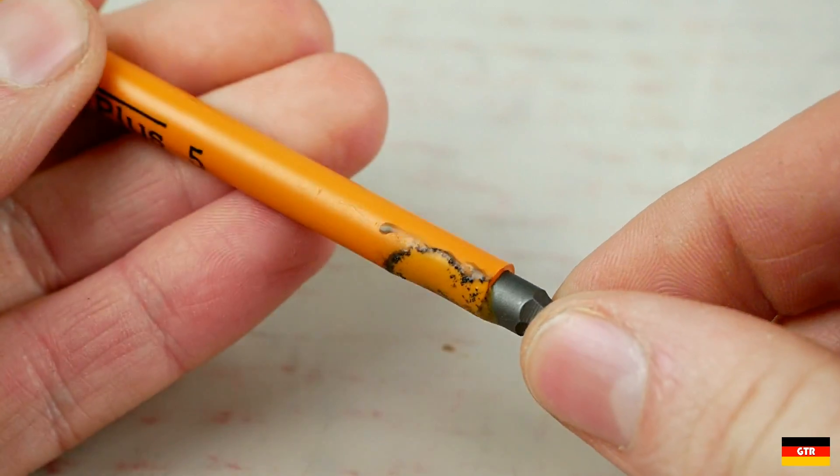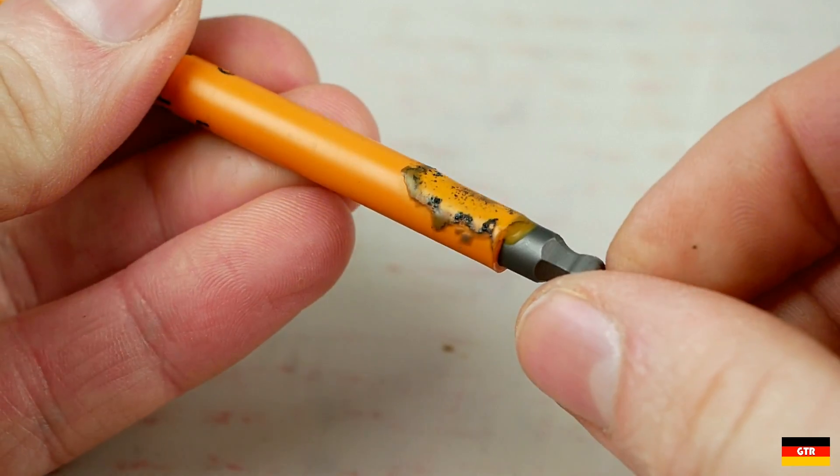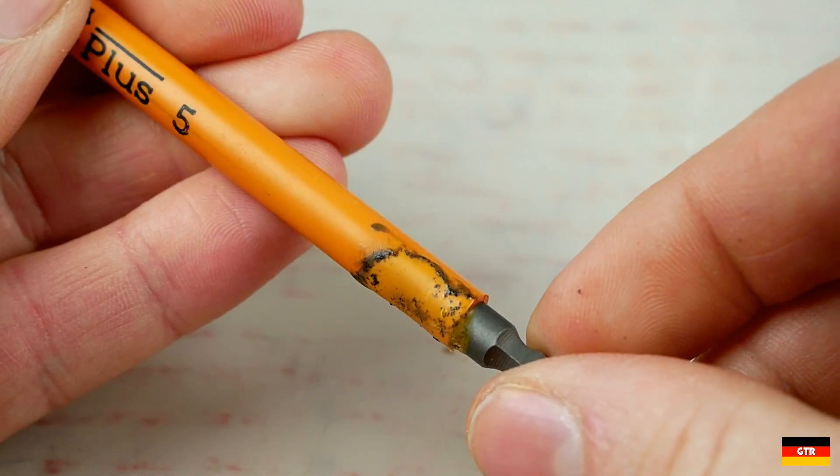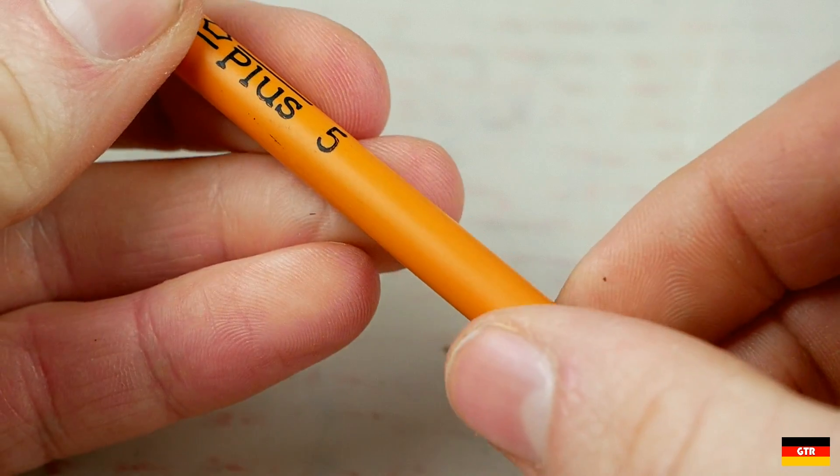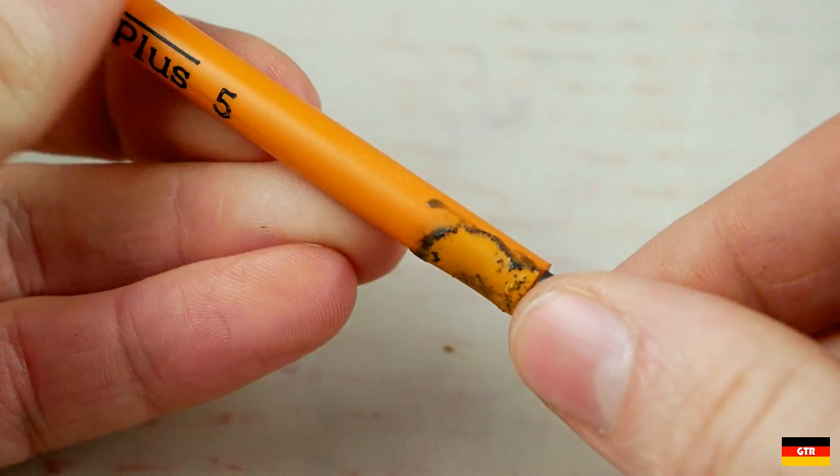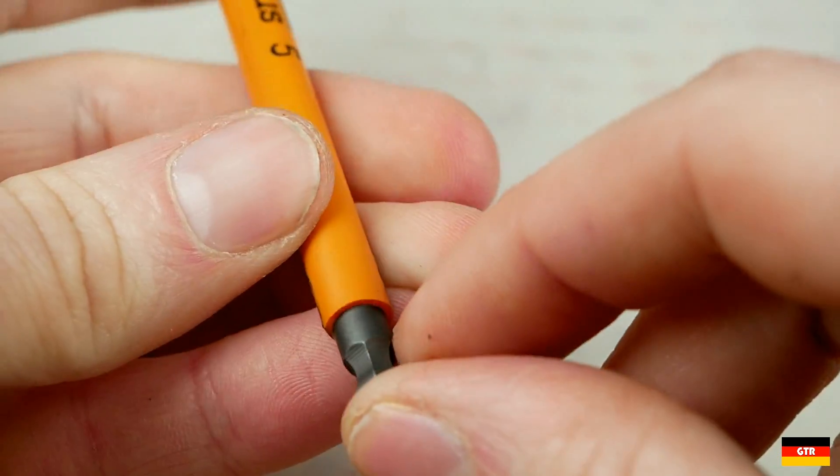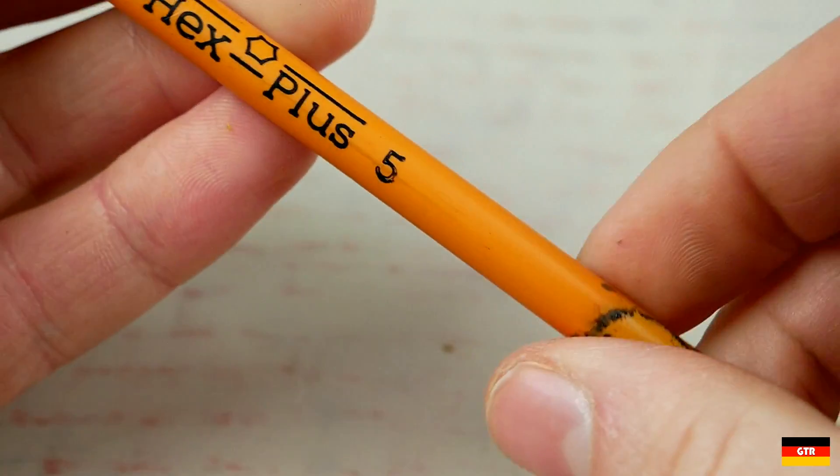So it definitely didn't catch on fire but you can see it started to melt. So it's probably like a plenum rated type of PVC I'm guessing. But it doesn't look like it's shrunk anymore so if it is like a heat shrink type plastic they did a pretty good job of getting as small as they could without damaging it.